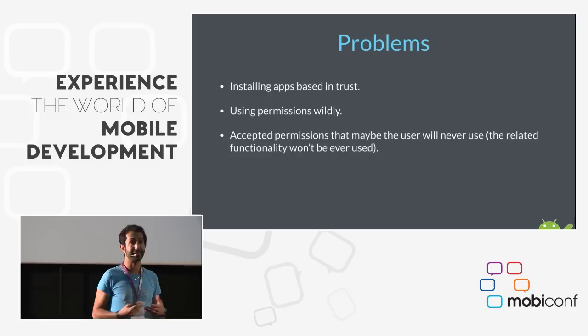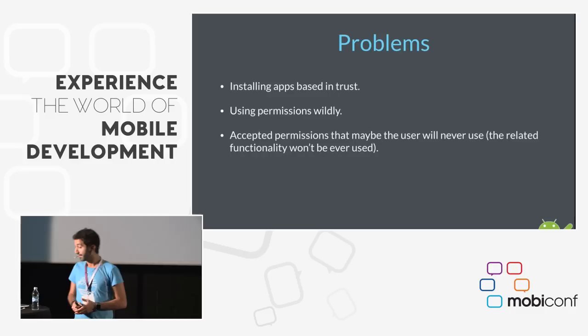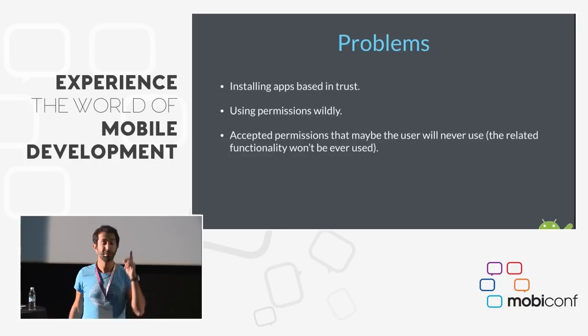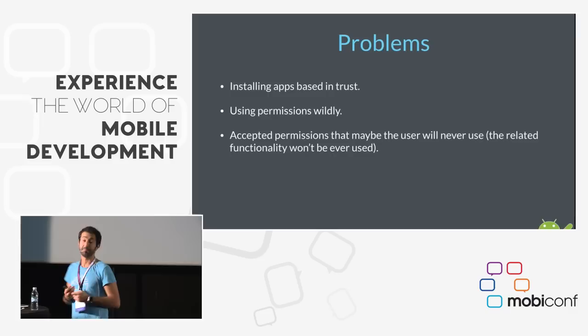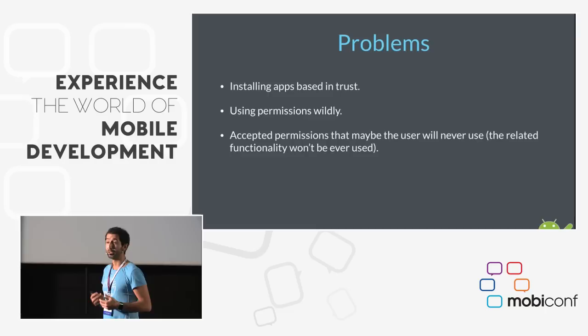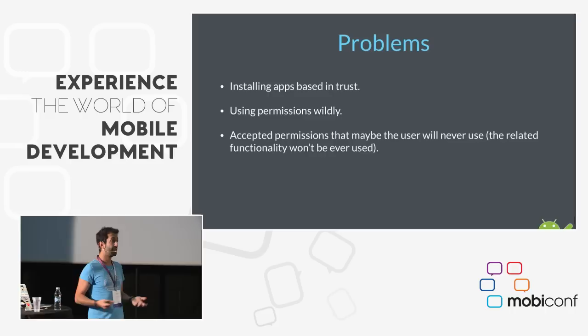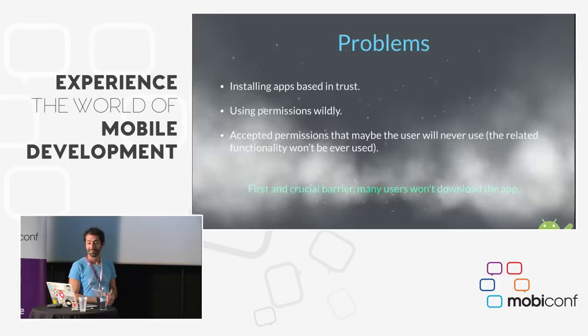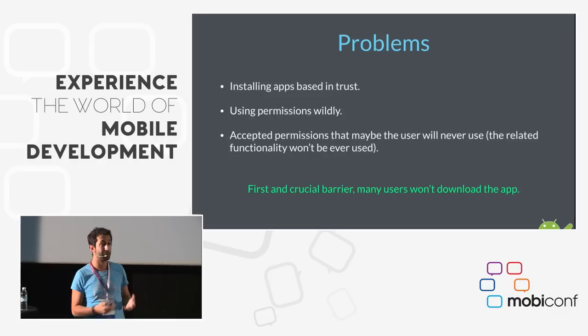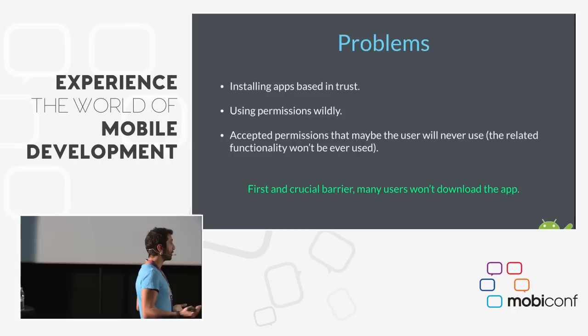Asking for permission in current Android is free — it's just one line in the Android manifest and that's all. Also, when the user installs an app they see this screen and have to accept permissions. But imagine the Facebook app is asking for camera, but maybe you're a user who is never going to use the camera feature — maybe you just want to read the news feed and post some things but never publish a photo. So you're accepting permissions you may never use. This creates the first crucial barrier: many users won't download our app.